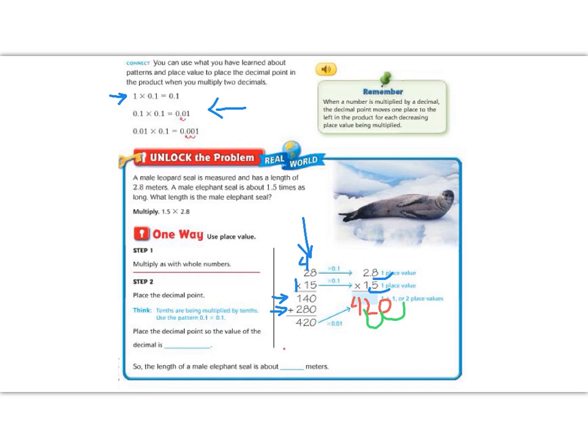So our answer is actually 4.20 because there's two decimal places, so we move over two decimal places. That means that our point is right before the tenths place, so the decimal point of the decimal is in the tenths.